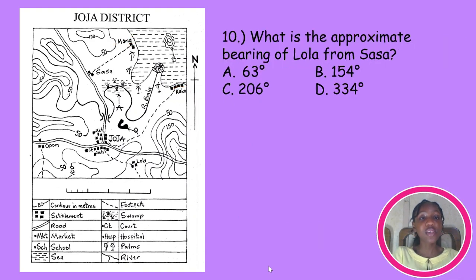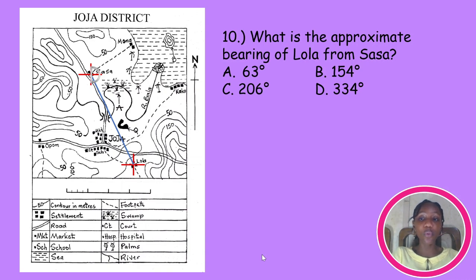What is the approximate bearing of Lola from Sasa? Draw cardinal points on the places in question and draw a line connecting them. Place your protractor on Sasa, since the question says 'from Sasa' — remember 'from' is the indicator. Taking our bearing from 0 degrees to our line, we get 155 degrees, which is close to option B. Remember that the bearing is measured from north to the line drawn. And with that, let's move on to practical geography.